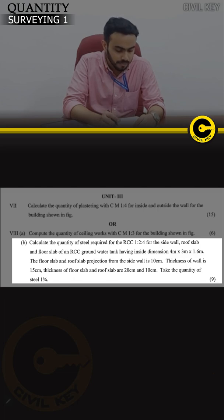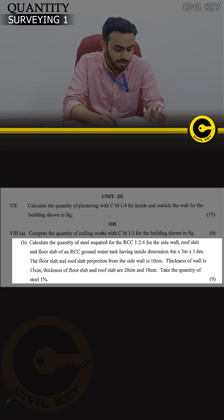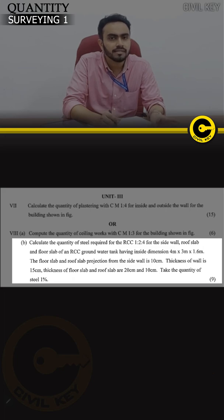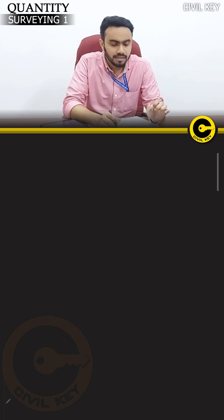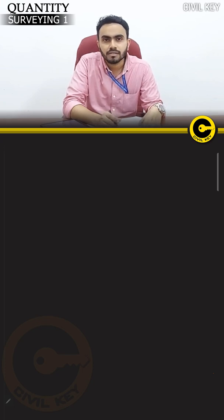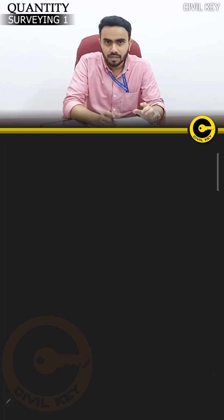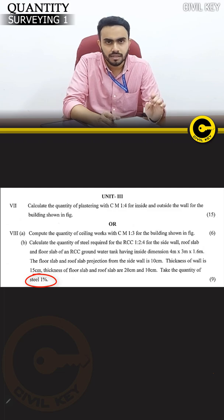The mix ratio is 1:2:4 for the side wall and 2:4 for the roof slab and floor slab of an RCC ground water tank having inside dimensions 4m × 3m × 1.6m. The floor slab and roof slab projection from the side wall is 10cm. The thickness of the wall is 15cm, thickness of the floor slab is 20cm, and the roof slab is 10cm.